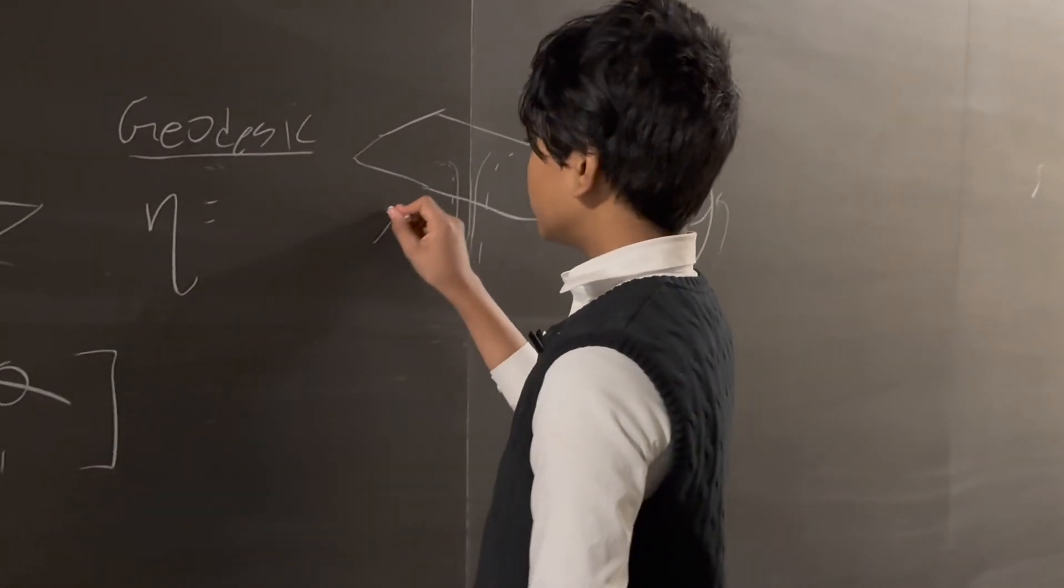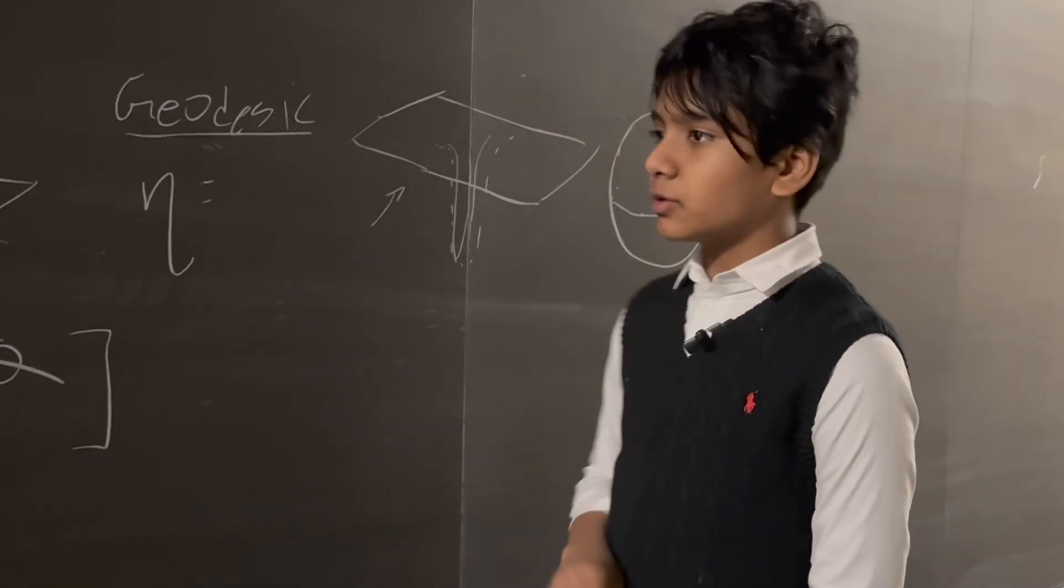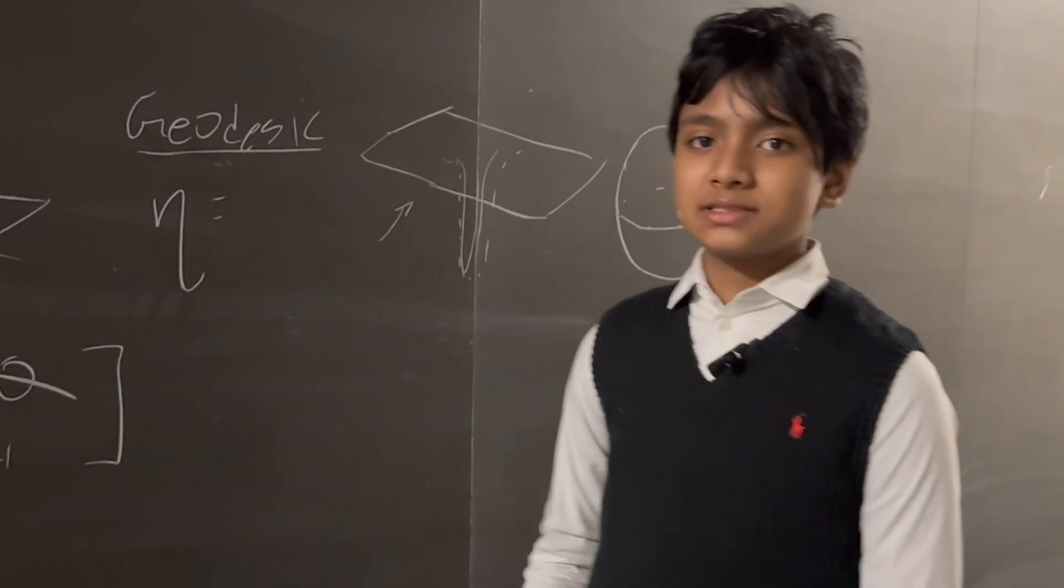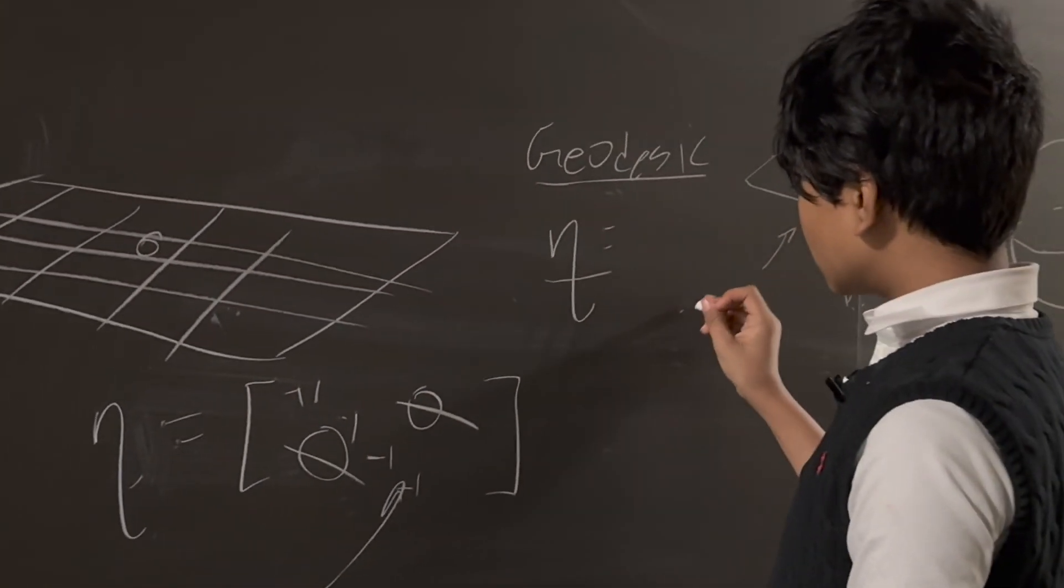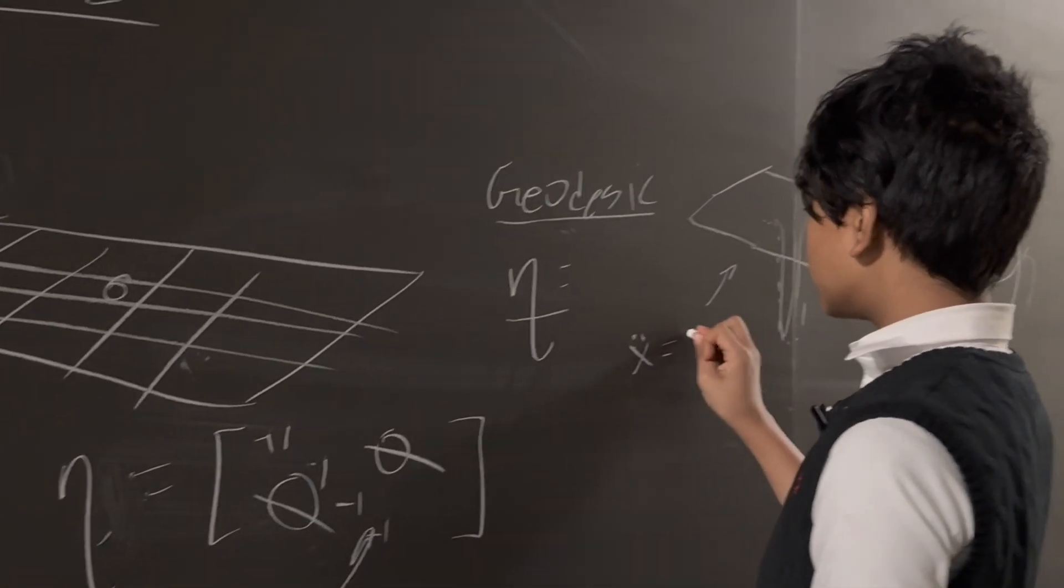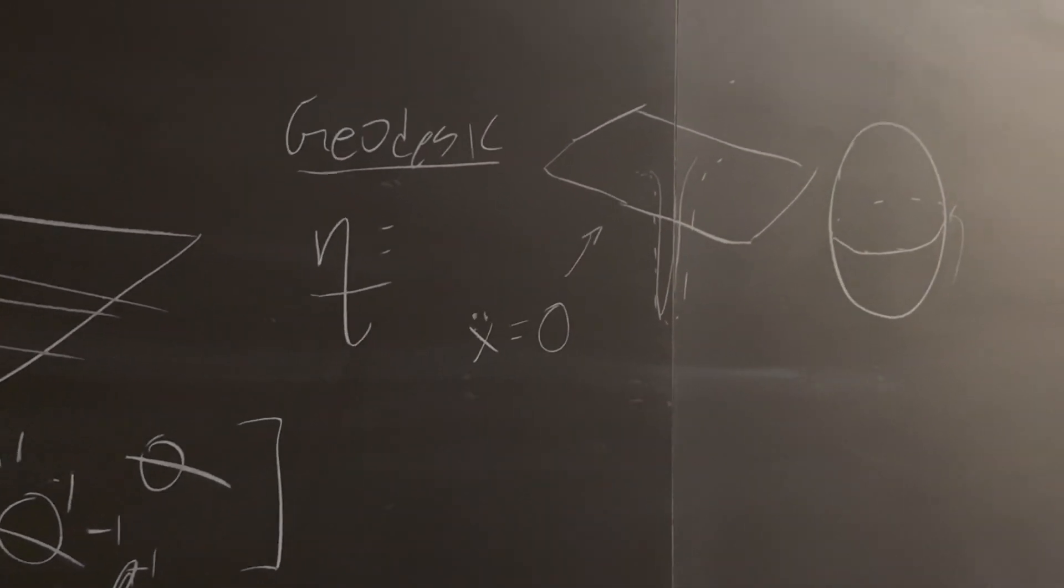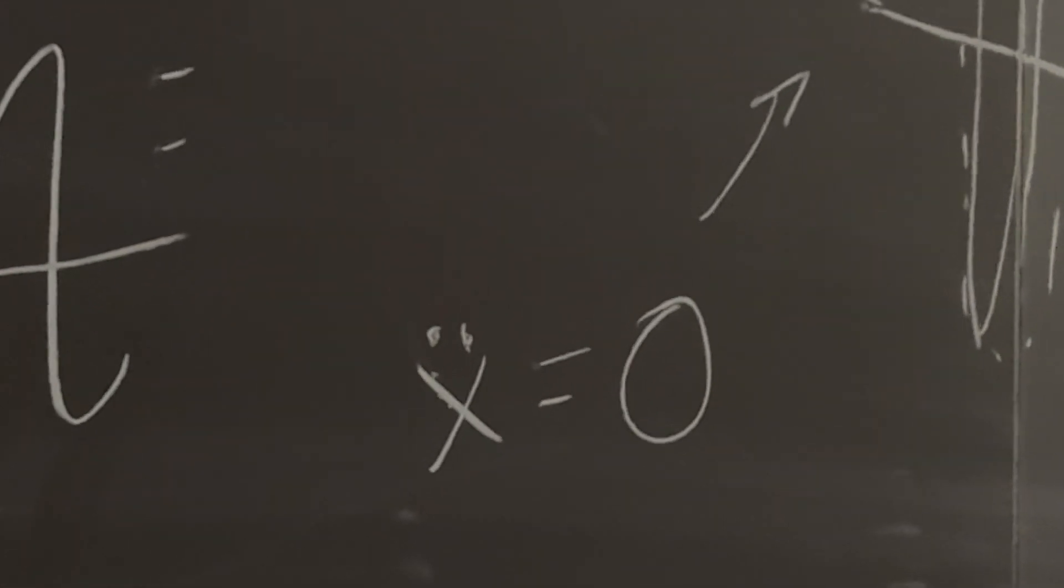And now we have to deal with any sort of manifold because of the properties of mass distorting spacetime. So essentially, usually when we have flat spacetime, we have that acceleration or the generalized coordinate double dot is equal to zero.